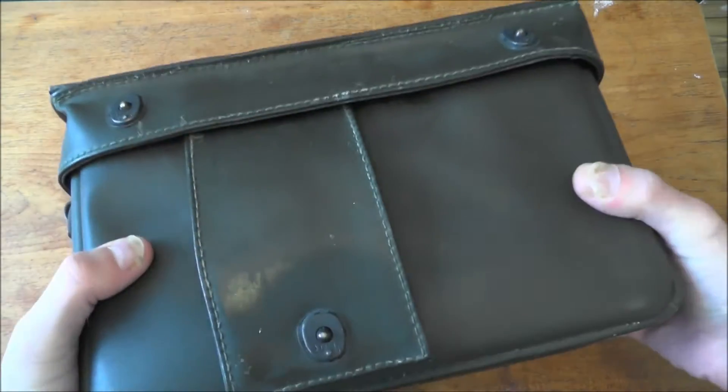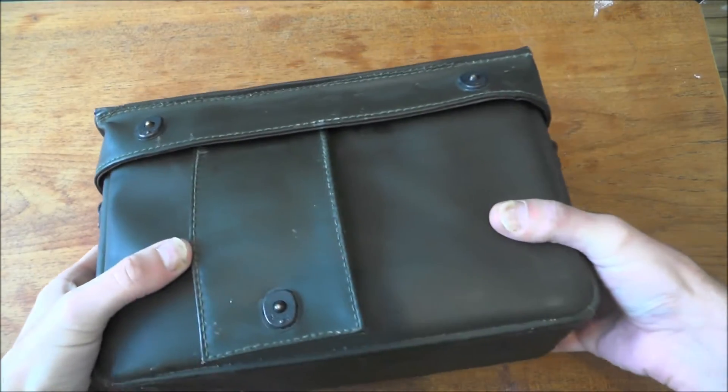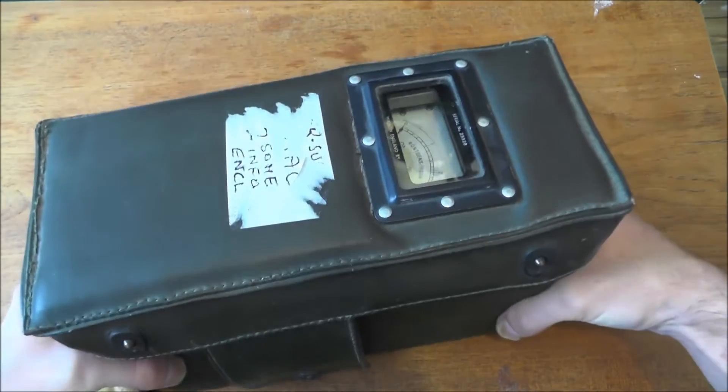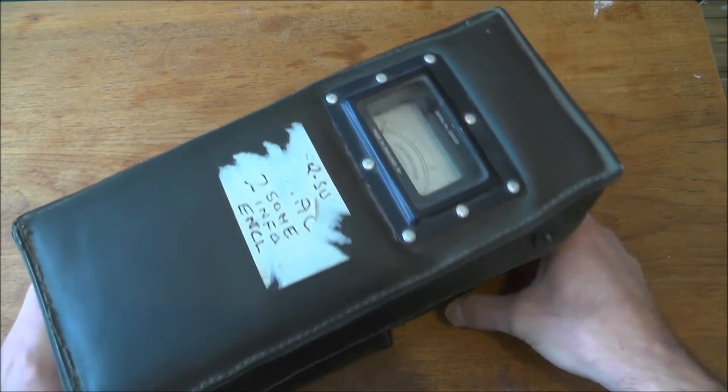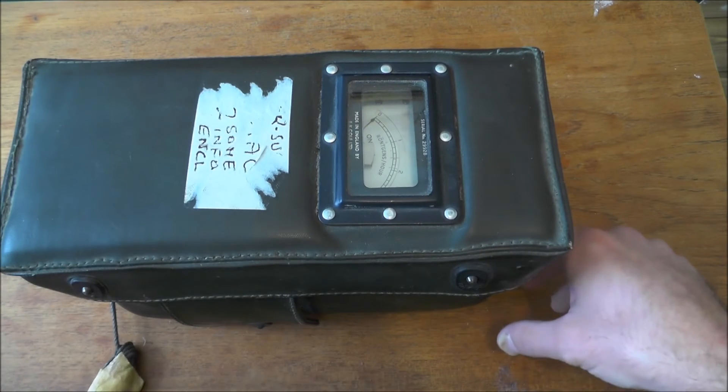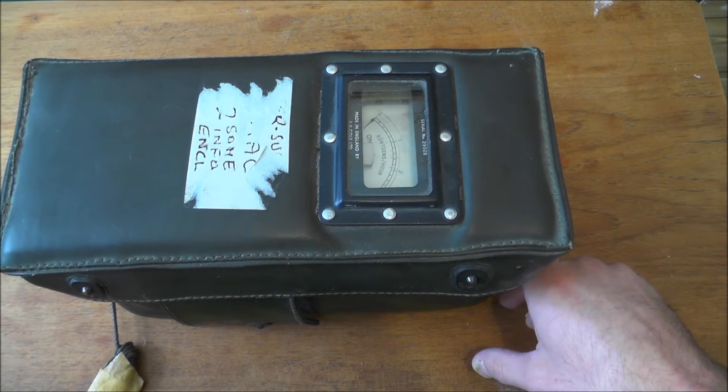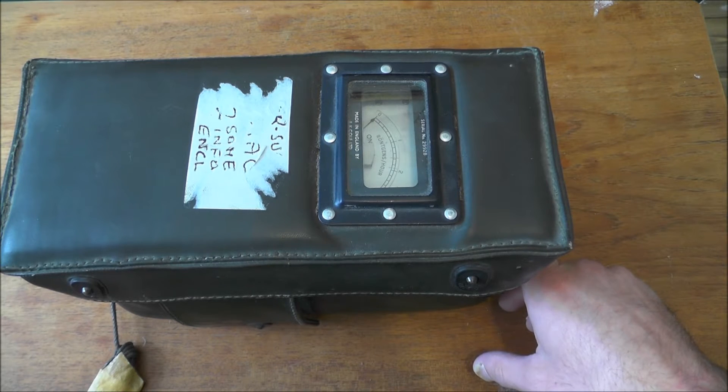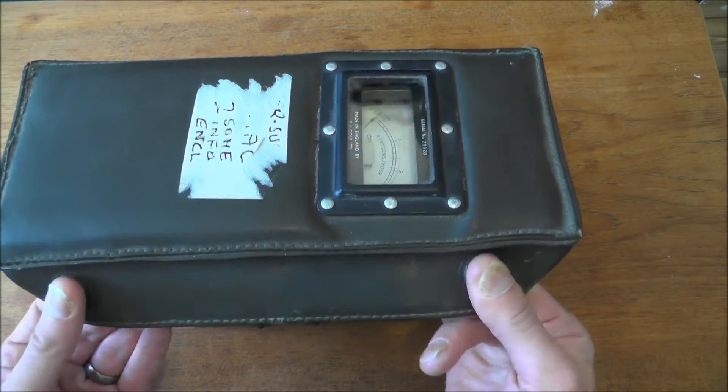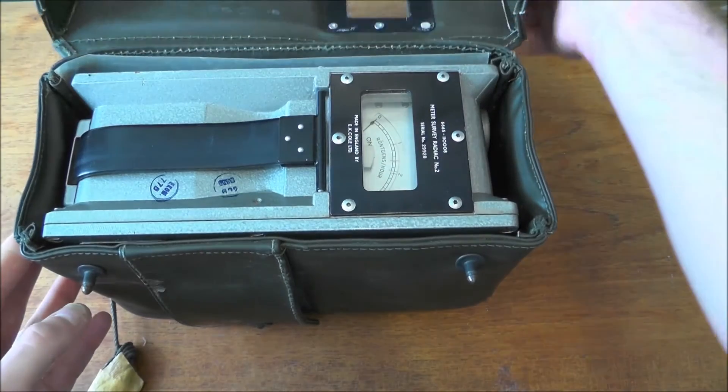Right, so this was used by the Royal Observer Corps. I don't know how many of these were actually issued, but I guess there was probably quite a few. The serial numbers are running into the tens of thousands, so it was certainly widely used. It was apparently the main radiation detector that the British military used for a period of about 30 years.